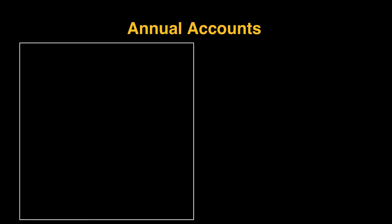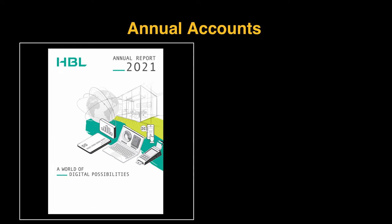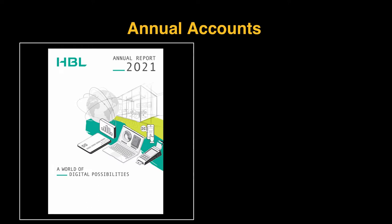All public limited companies would do that. One of those is a bank in Pakistan by the name of Habib Bank Limited. This is what the front page of their annual accounts for the year 2021 looks like. We're going to go a little bit deeper and look at some of the information given by this bank, but from the very first page there are a couple of things we need to determine.